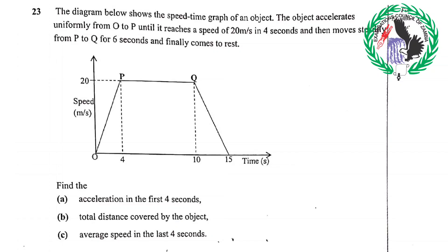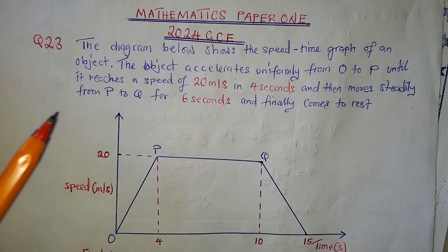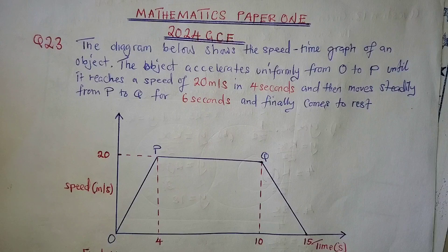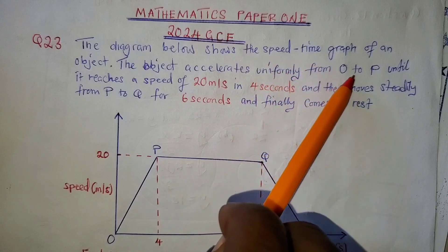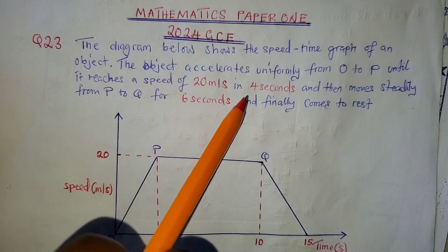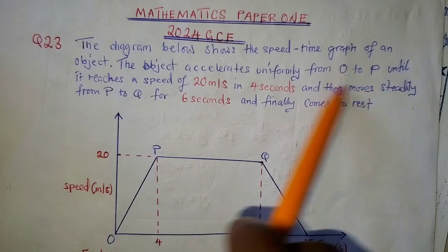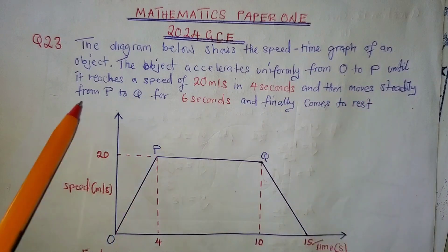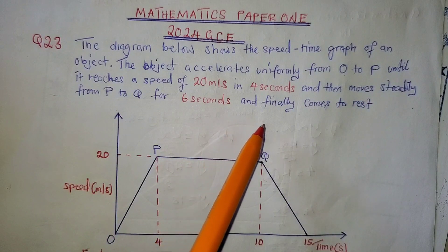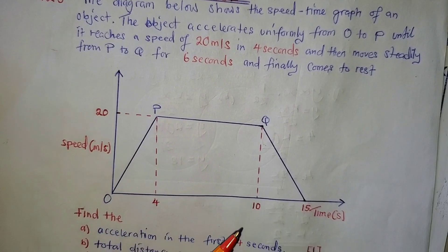Hello everyone, we are presented with question 23 of the 2024 GCE Mathematics Paper 1. This is the last question, and it is under the speed-time graph or velocity-time graph topic. The question states: the diagram below shows the speed-time graph of an object. The object accelerates uniformly from O to P until it reaches a speed of 20 meters per second in four seconds, then moves steadily from P to Q for 60 seconds, and finally comes to rest.